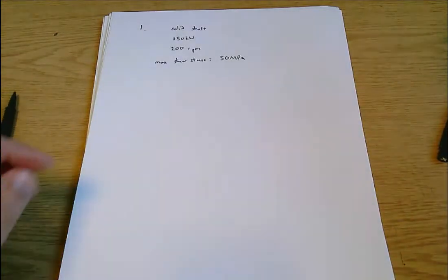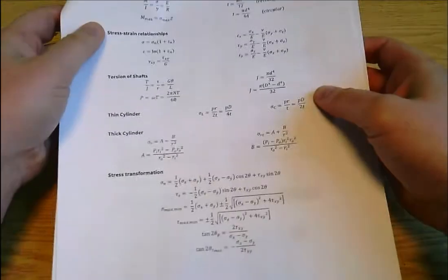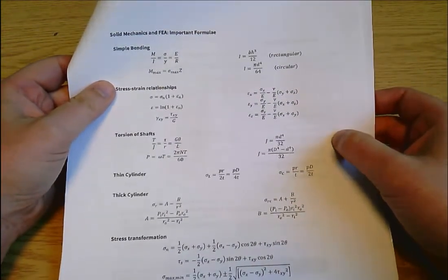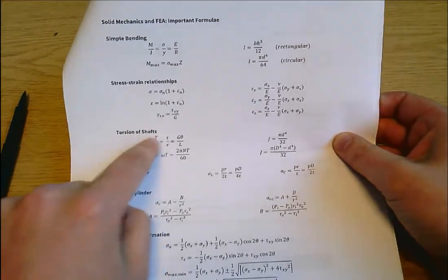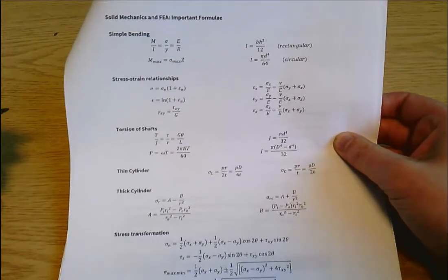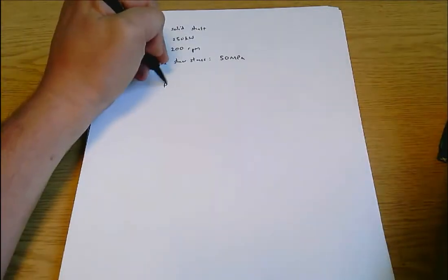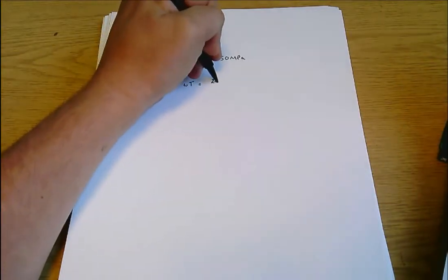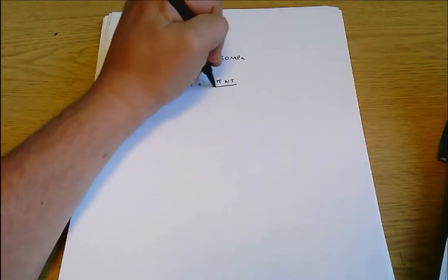So whenever we get these questions about power transmitted by a shaft running at a certain rpm, it's just worth knowing that the section we're interested in on the data sheet is torsion of shafts. I'm just going to immediately write down the equation I want first which is power is omega t, that's a very general formula but specifically related to the problem here.